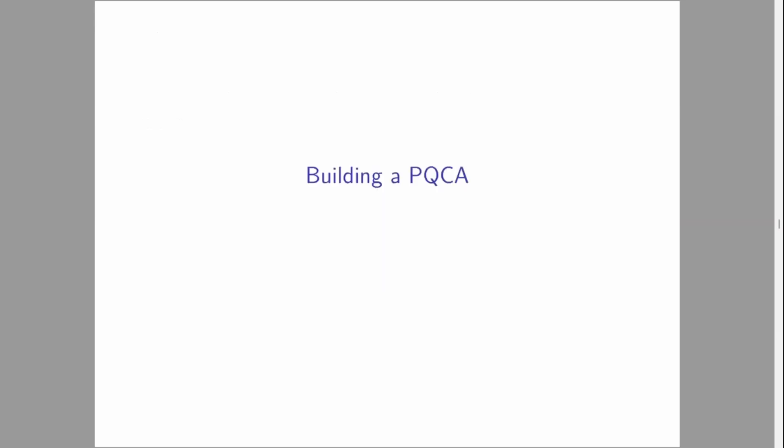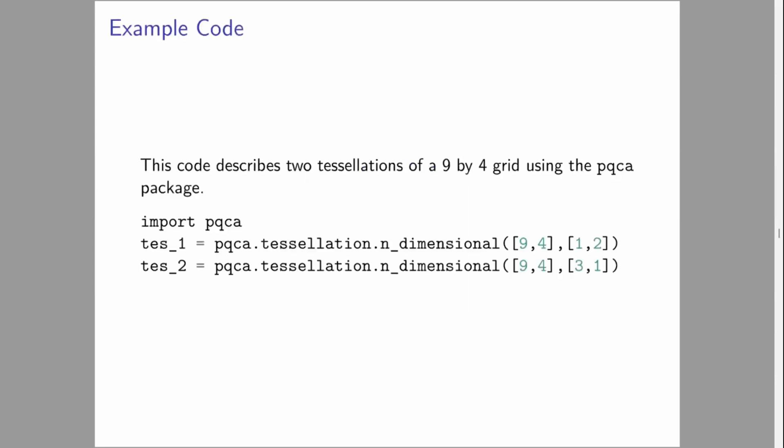So that's the theory. We're now going to build them with some Python. The PQCA package was built for this purpose by myself on behalf of the Q-Tune project, and it understands tessellations. This is going to partition a nine by four grid two different ways. The first way is one wide and two tall cells, just two cells stuck together. The other is three wide and one tall, so three cells stuck together horizontally. Those are our partitions.